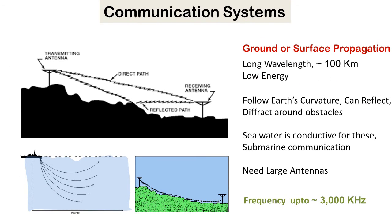Ground or surface carrier waves have a frequency from three kilohertz to about three megahertz. They have long wavelength and low energy. They follow Earth's curvature, meaning they can bend around it. They can reflect from obstacles and deflect around them, making them very good for low frequency radio and terrestrial communications.